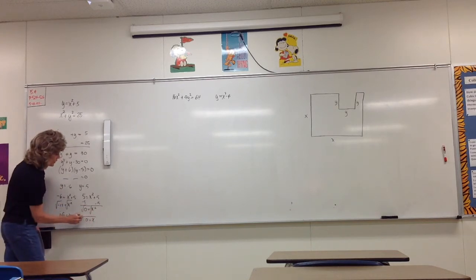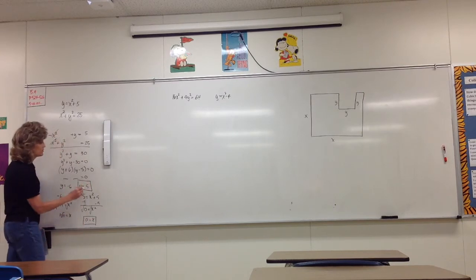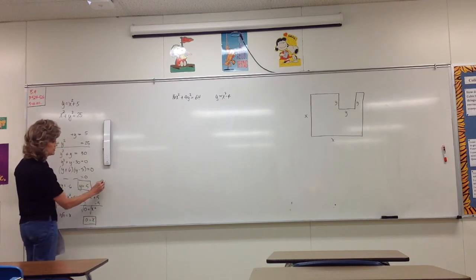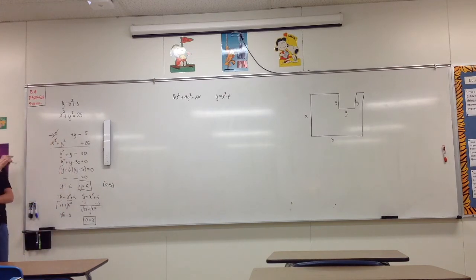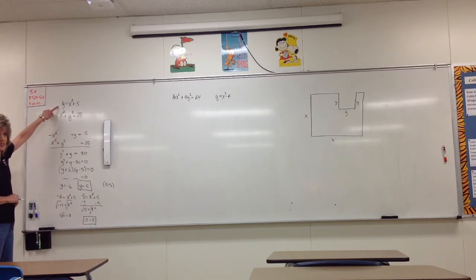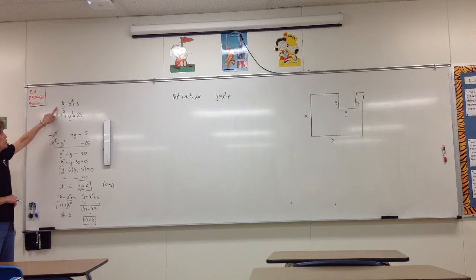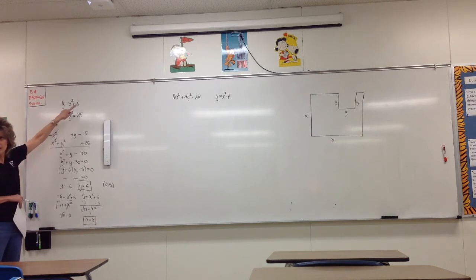So the ordered pair solution is (0, 5). That makes sense graphically: y equals x squared plus 5 is a parent parabola shifted up 5. The second equation is a circle centered at (0, 0) with radius 5. The parabola and circle have only one point in common at (0, 5).